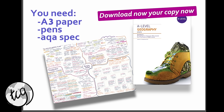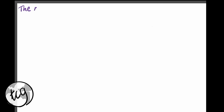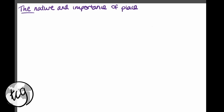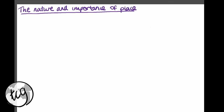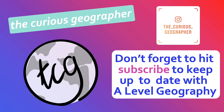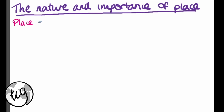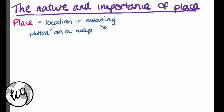So what we're going to start with for the first part of Changing Places is the nature and importance of places, and then we are going to define place and see why it is important in human life. Place can be summarised as location plus meaning. Location is the physical location where it can be plotted on a map or described using latitude and longitude, and meaning is the social construction — what the place means to a person.